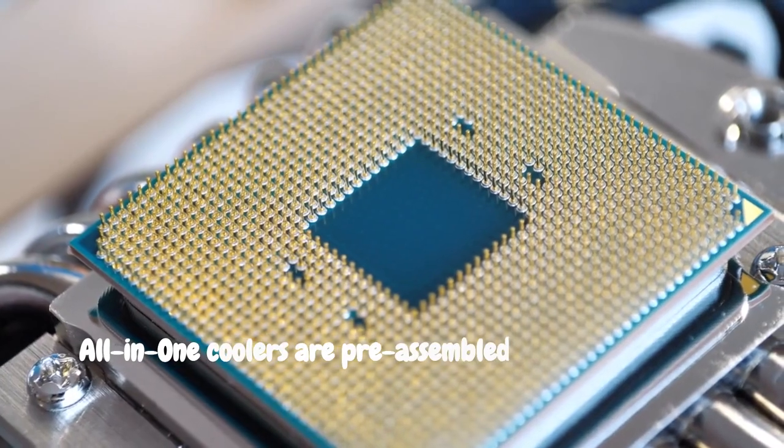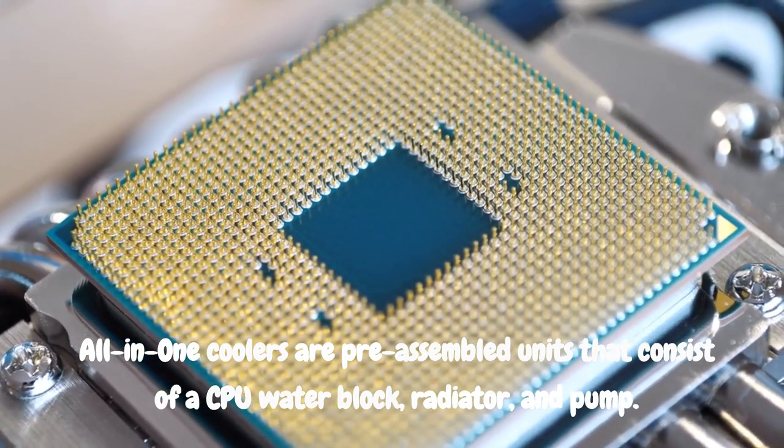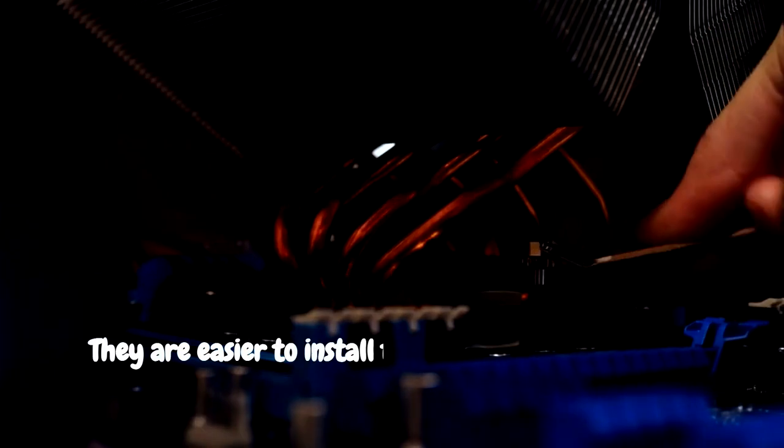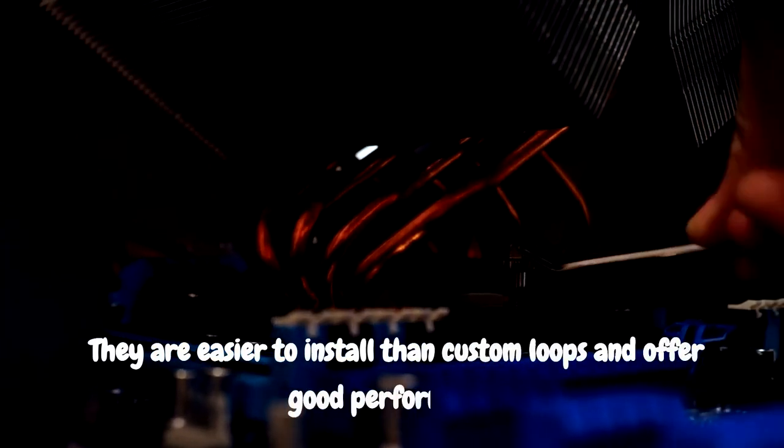All-in-one coolers are pre-assembled units that consist of a CPU waterblock, radiator, and pump. They are easier to install than custom loops and offer good performance.